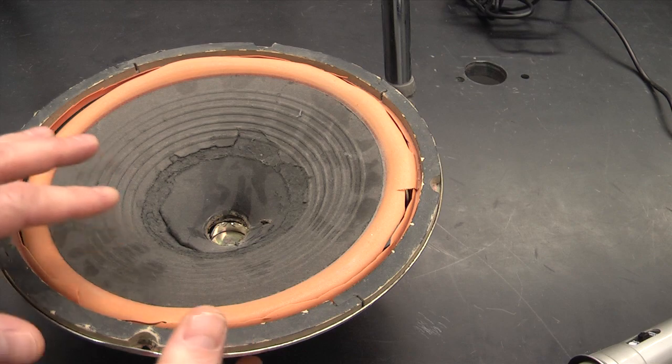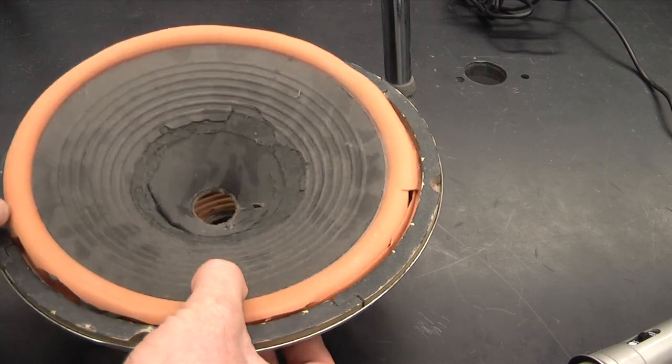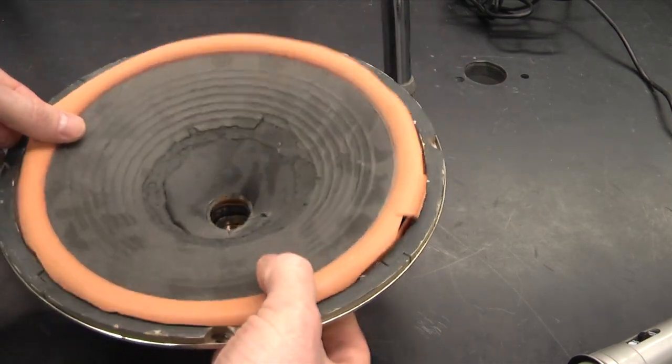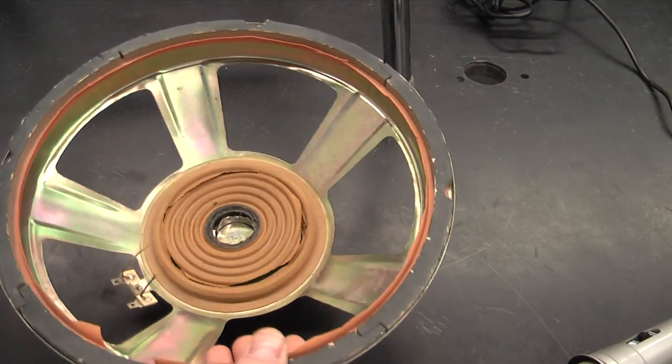So here's a beat-up speaker, and this is how it's working. The pushing and pulling is moving this paper diaphragm, and it's got some foam around the edges that allows it to move. It's held in this metal basket.